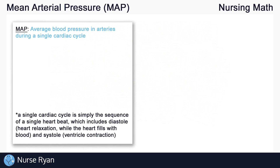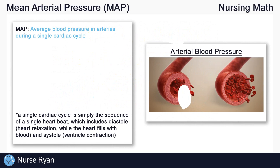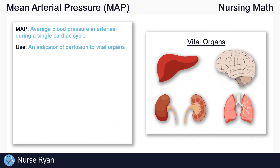The mean arterial pressure is the average blood pressure in our arteries during a single cardiac cycle, and it is used as an indicator of perfusion to our vital organs. This basically means that MAP helps to determine whether there is adequate blood flow and pressure to supply enough blood to all of our major organs. 70–100 mmHg is considered an average or normal mean arterial pressure.